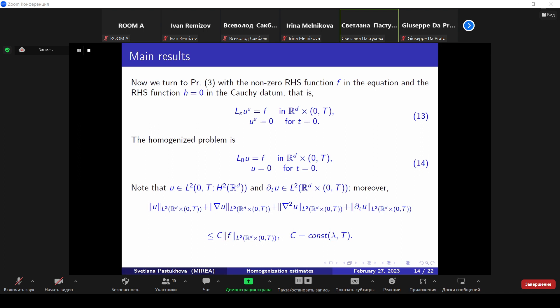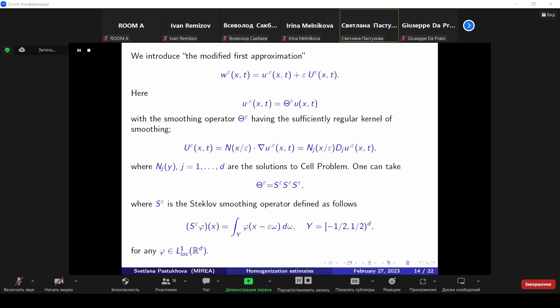We make some transformation. We raise both parts of it to the second power. You see here in the top, the result of this raising, and integrate over T and come to the central estimate. You see here L2 norm over the layer R to the d in product with zero T capital. And the majorant in the right hand side contains power of epsilon deteriorated by some logarithmic factor. It's a very peculiar feature of this estimate on the layer. Now we turn to the opposite situation when in problem 3, we have zero right hand side function in the Cauchy datum and the right hand side function f non-zero in the equation. You see here the homogenized Cauchy problem 14, and we know that the solution to the homogenized problem due to the constancy of coefficients has the following regularity.